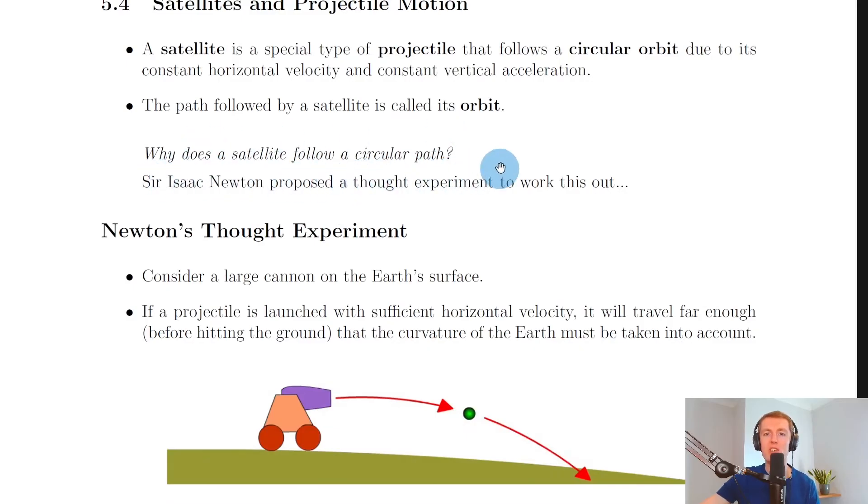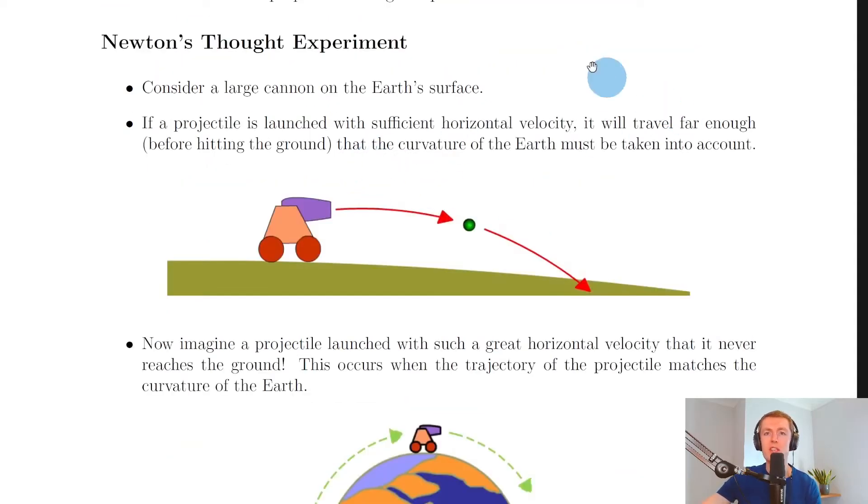Why does a satellite follow a circular path in the first place? Sir Isaac Newton proposed a thought experiment to work this out. A thought experiment is one that can only really be thought about and not carried out in real life.